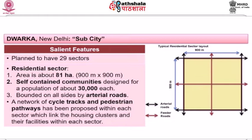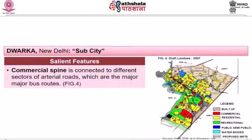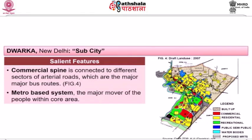From the drawing you can see the arterial roads, and then there are feeder roads which connect these sectors to the surrounding areas. The commercial areas are planned along the major spine where the MRTS is also planned, making it an example of transit-oriented development, where the commercial spine is connected to the different sectors.